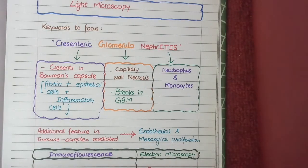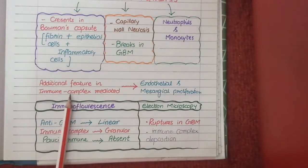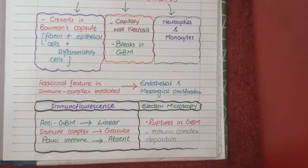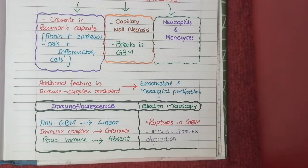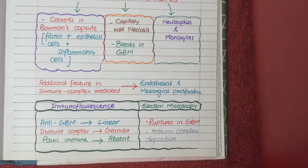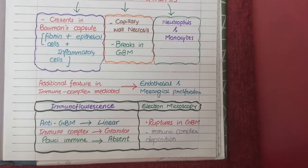One of the three types of rapidly progressive glomerulonephritis is immune complex mediated glomerulonephritis, which has one additional light microscopic feature: endothelial and mesangial proliferation. As studied previously, hypercellularity or proliferation of endothelial and mesangial cells is a consistent feature in post-streptococcal glomerulonephritis and IgA nephropathy. So if these conditions progress to rapidly progressive glomerulonephritis, features of endothelial and mesangial proliferation will be visible. However, in the other two categories — anti-GBM mediated disease and pauci-immune glomerulonephritis — endothelial and mesangial proliferation is not usually seen.